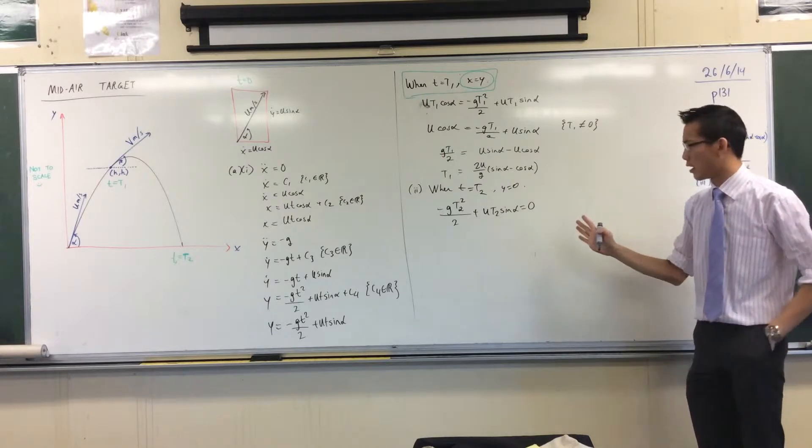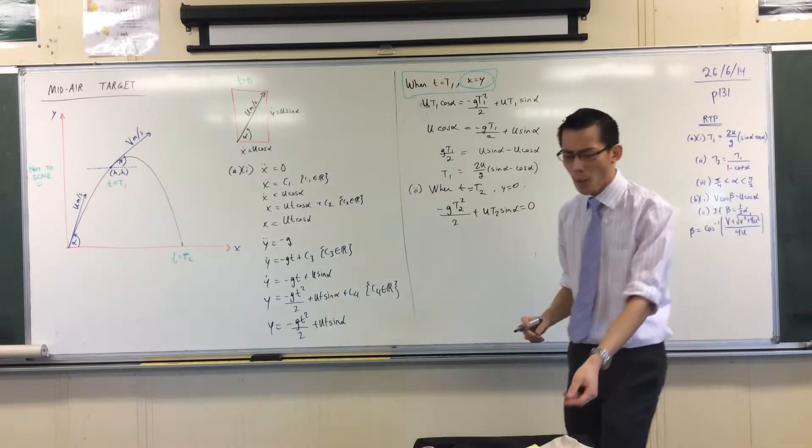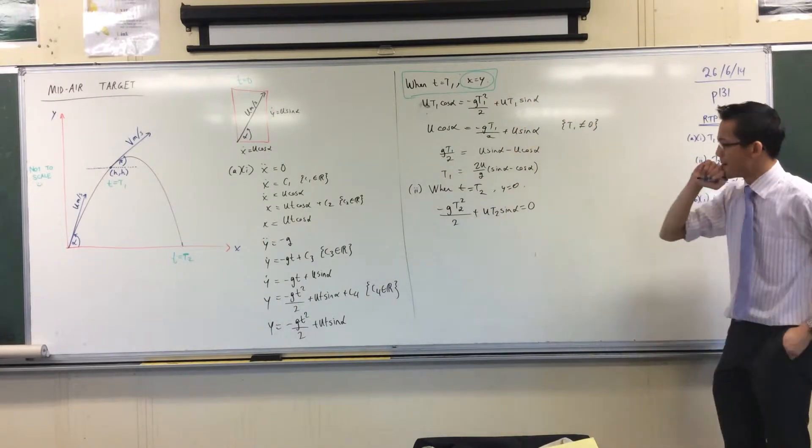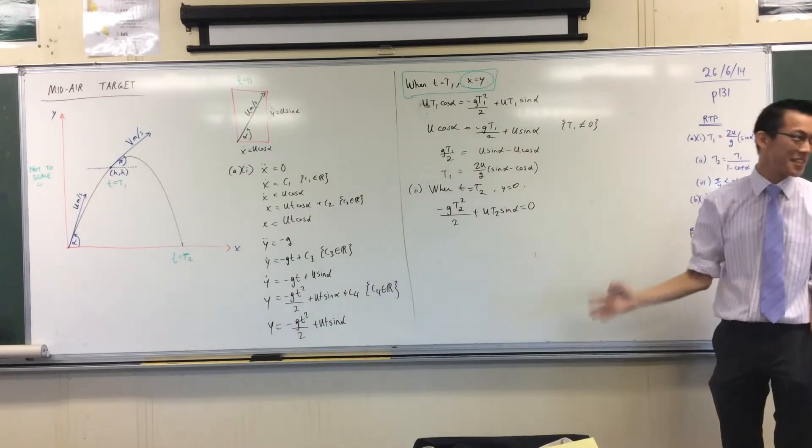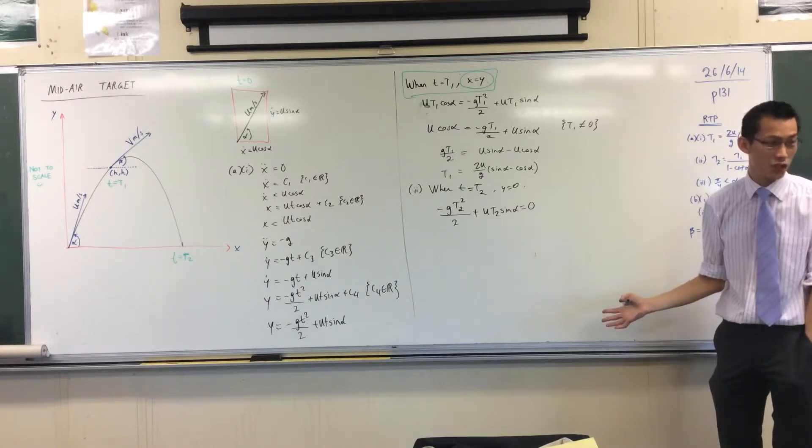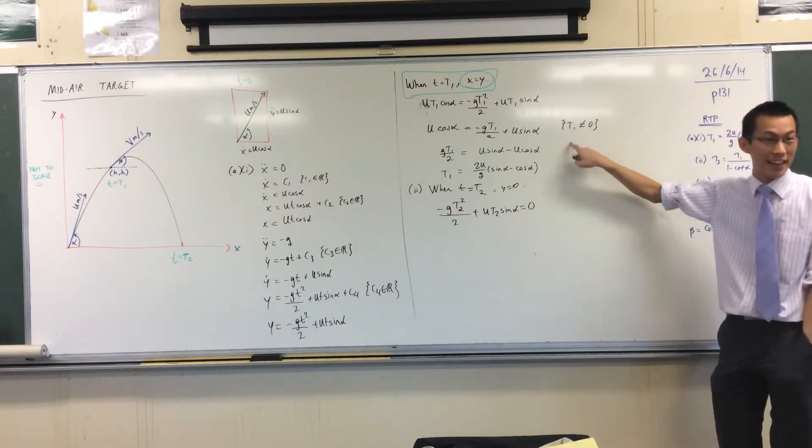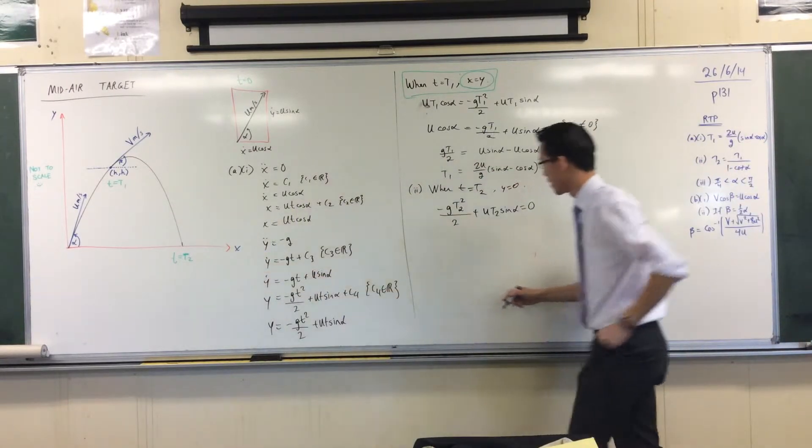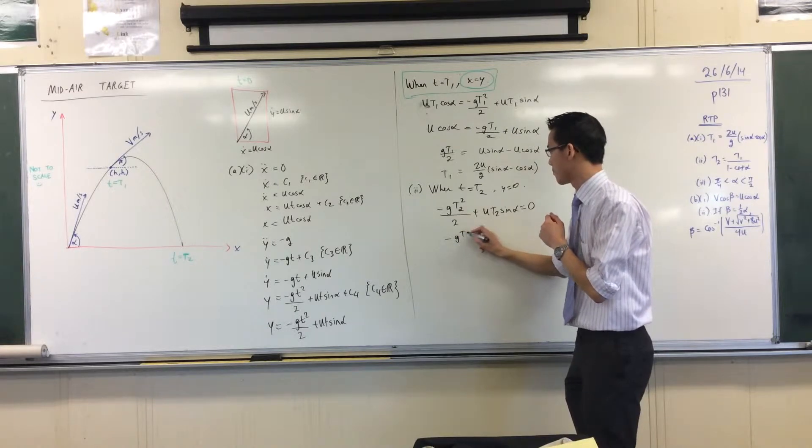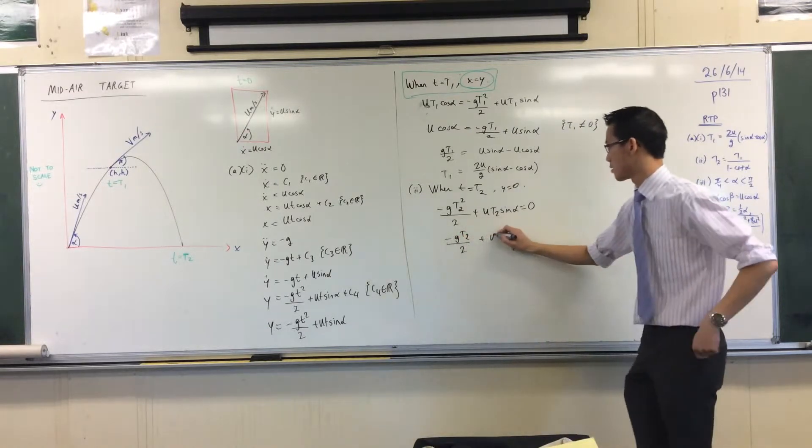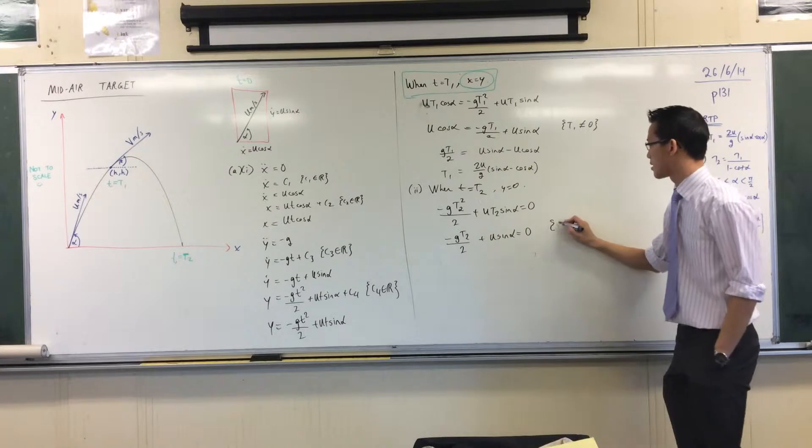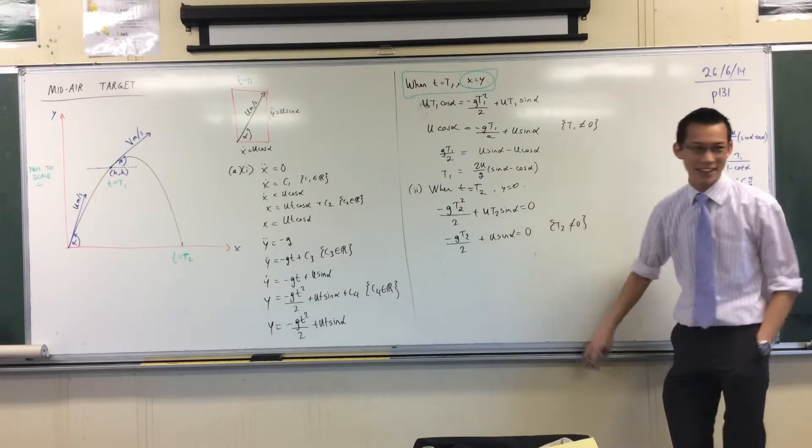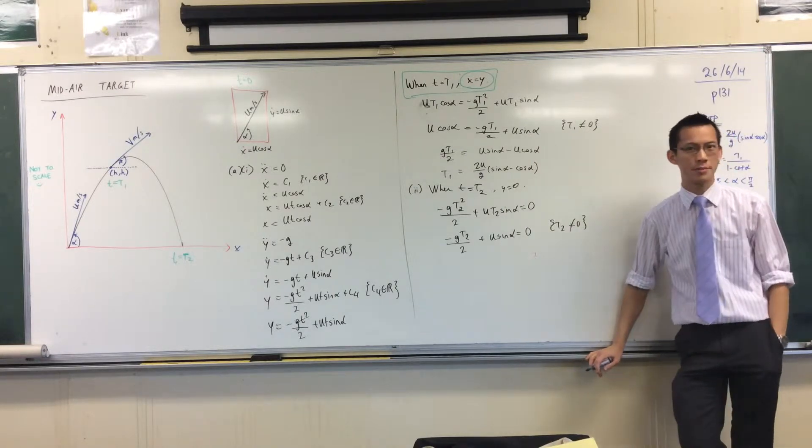Now, what am I going to do here? A couple of different things. I want to make T2 the subject, don't I? Just like I made T1 the subject. Again, just like before, I see a common factor, T2. And I can divide through, just like I divided through here, because T2 is not zero, right? So I'm going to do that. I'm going to get this plus this, and I'm going to say why, that's a terrible brace, sorry. I'm going to say why I can divide through by T2. I must justify that, that's important.